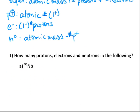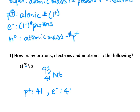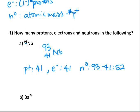Let's look at this in practice. Here's niobium-93 — 93 is the atomic mass. We need the atomic number, which when you look at the periodic table is 41. So we must have 41 protons. This is neutral, so that's also 41 electrons. And neutrons would be 93 minus 41, which is 52. And that's it for niobium.